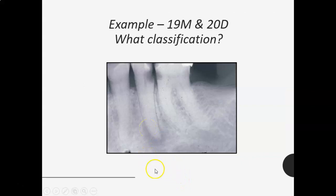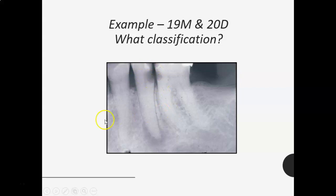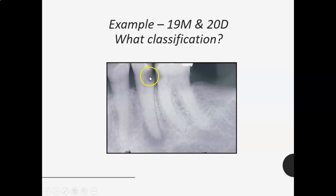Here's an example of root caries on teeth 19 and 20 — pretty severe and large root caries, especially on the premolar since it's much smaller in circumference, so it gets close to the pulp faster. You can see a radiolucency down at the apex — see how large this decay is and how close to the pulp. There's pathology at the apex of the root, meaning the caries got so big the pulp is now infected, resulting in a periapical abscess.